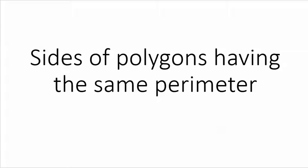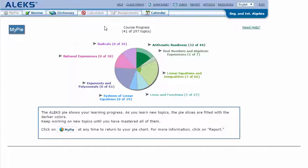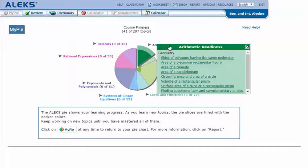Sides of polygons having the same perimeter. In your ALEKS, mouse over the green slice arithmetic readiness to reveal the drop-down list of topics you need to cover, then click on sides of polygons having the same perimeter.